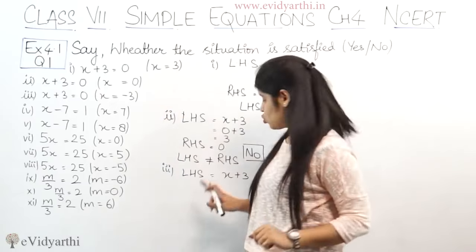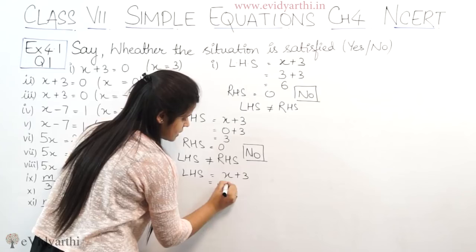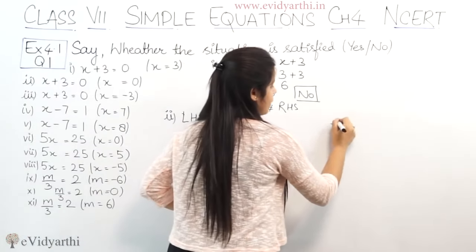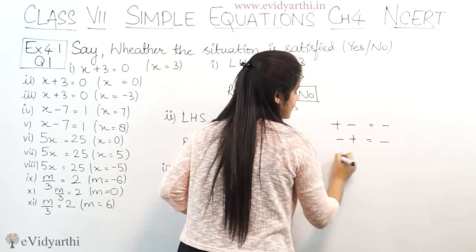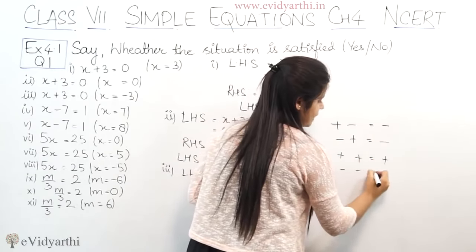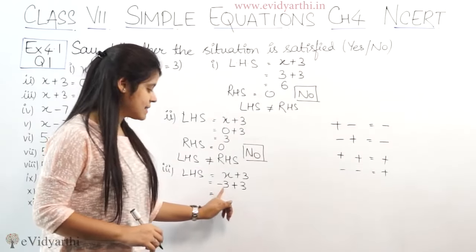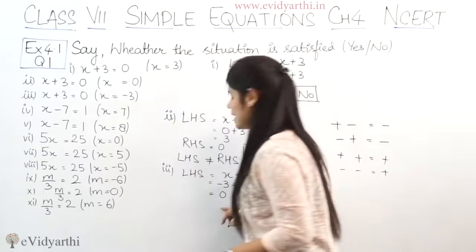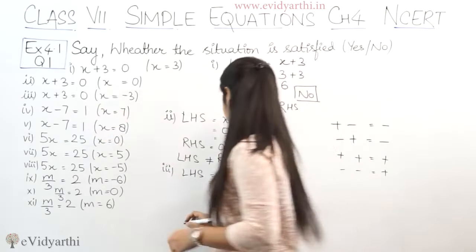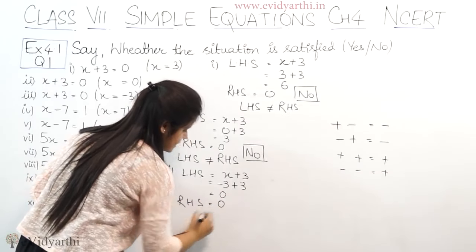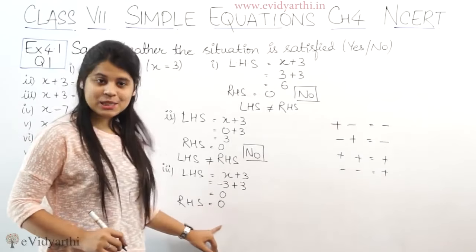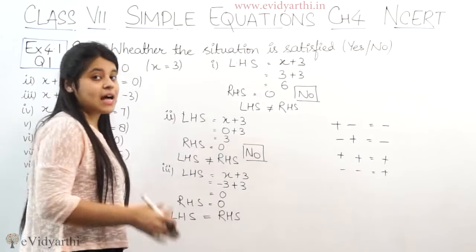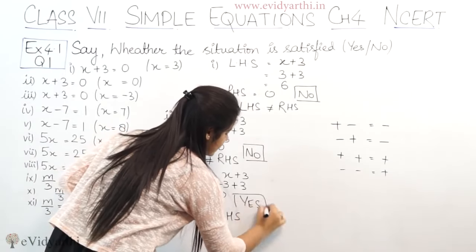Now I am going to use x value minus 3. So here I am going to write x value minus 3. That gives minus 3 plus 3, which is 0. And RHS given is 0. So LHS equals RHS — the equation is satisfied. The answer is yes.